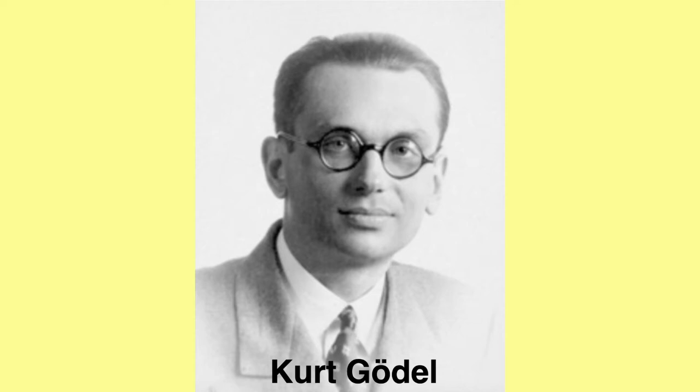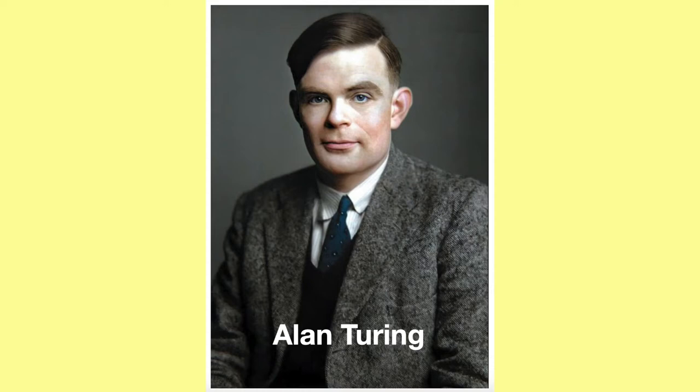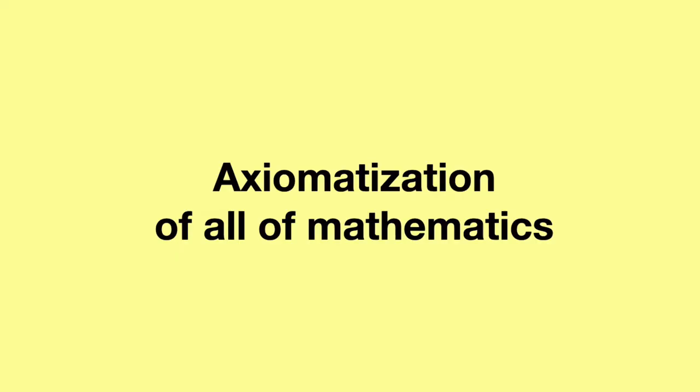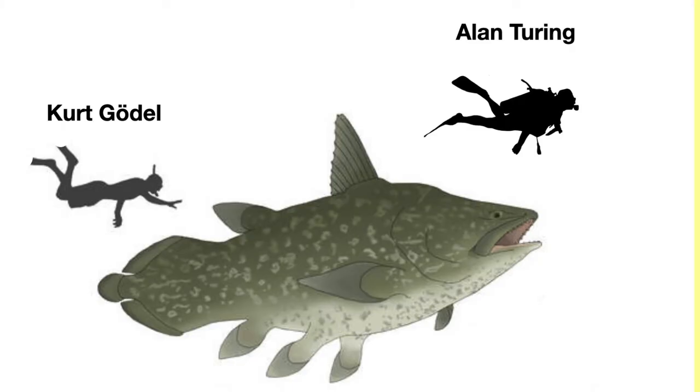Kurt Gödel and Alan Turing built such mathematical machines or games in the 1930s to demonstrate that axiomatization of all of mathematics was impossible. Gödel wrote about the undecidability of logical mathematical statements and Turing designed the Turing machine to show that there was no solution to the halting problem. Those guys designed simple mathematical machines or games that changed the course of mathematics.